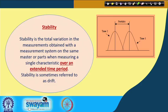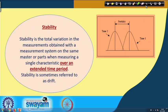Stability refers to the total variation in measurements obtained with a measurement system on the same master parts when measuring a single characteristic over an extended period of time. For example, I take a measurement at 7 o'clock in the morning, then at 4 o'clock in the afternoon, and then in the evening, and I check whether they match each other or if there is an issue with the stability of the measuring instrument.